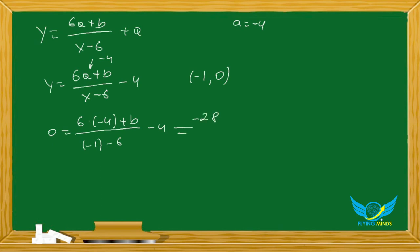This equals negative 24 plus b over negative 7 minus 4. From here we have 4 equals negative 24 plus b over negative 7.